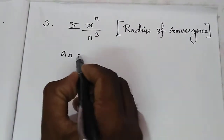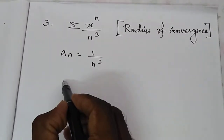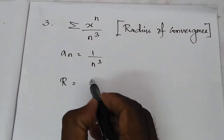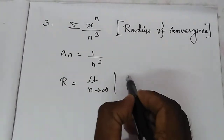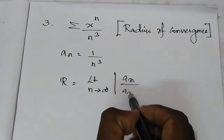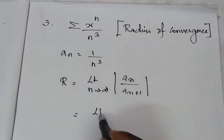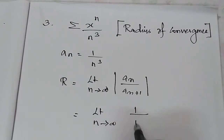Here, a_n is equal to 1 by n cube. Now we are going to show the radius of convergence. We take the limit n tends to infinity of mod of a_n by a_n plus 1. The limit n tends to infinity of n cube equals 1 by n cube.